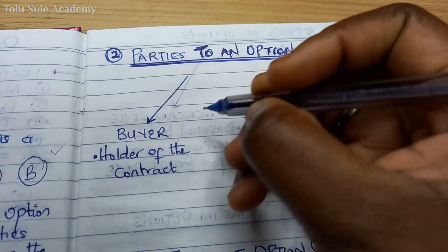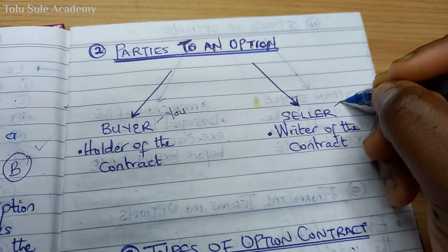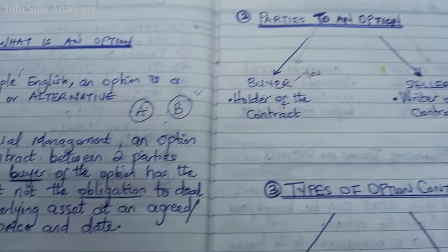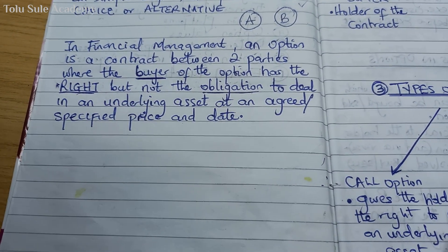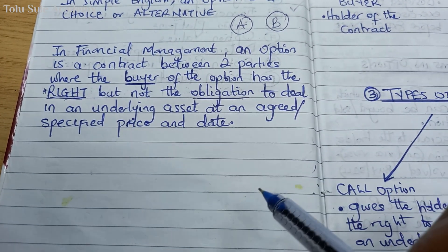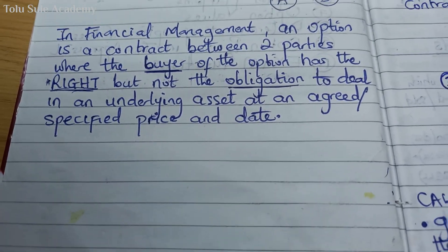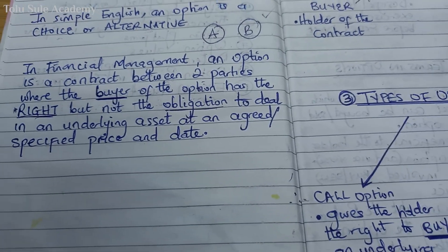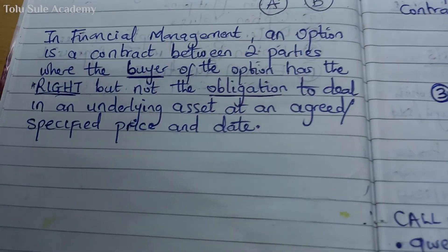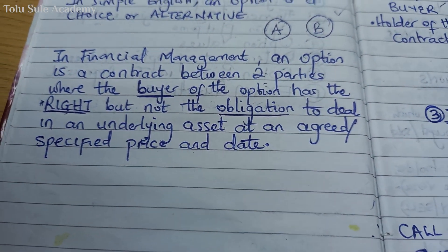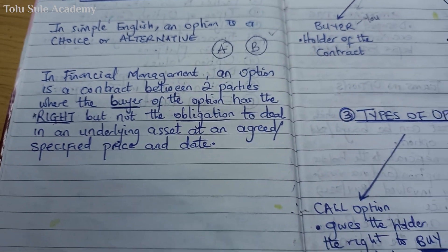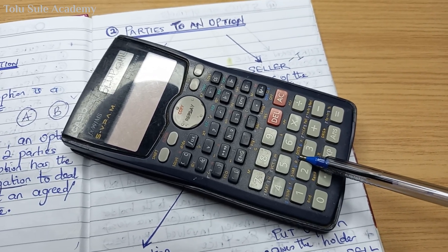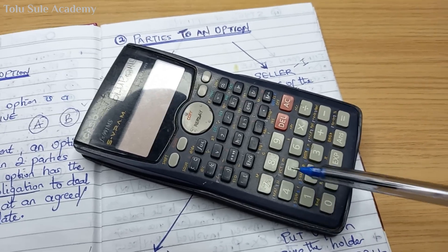Let's assume you are the buyer and I am the seller. The buyer is also the holder — you hold the contract, which means holding the right but not the obligation to deal in an underlying asset. The underlying asset could be anything: a calculator, currencies, gold, interest rates, or a plot of land. You have the right to buy or sell it at an agreed price.